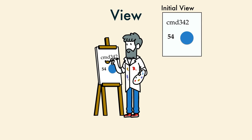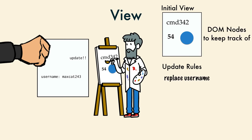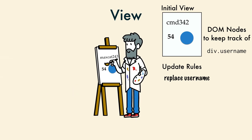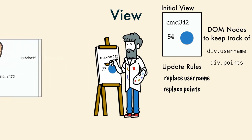But then the model sent the view an updated username. He had to know how to change his painting to show the new username. To do that, he had to keep track of a username div. He dutifully updated the DOM directly. Then the model sent the view another update. It was the points. The view added another update rule and started tracking the points div. Again, he updated the DOM in place.